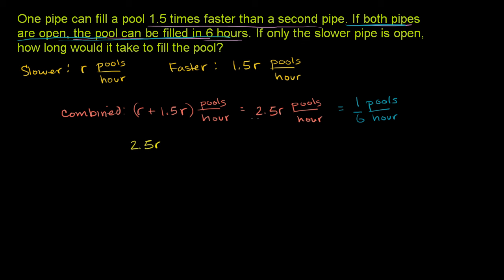The units are the same on both sides, so really this needs to be equal to this. So 2.5R needs to be equal to 1 sixth. You can multiply both sides by 6.